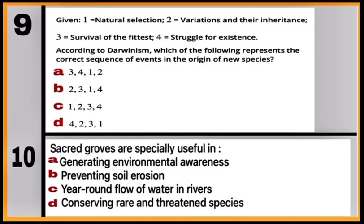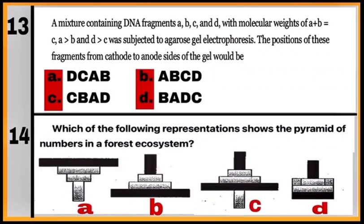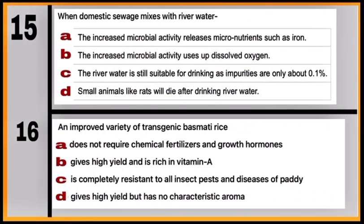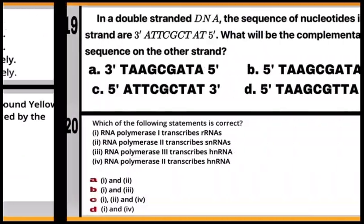Solve questions 9 and 10, and analyze the given pedigree chart of a family for a particular trait. Questions 11 through 16 follow next. Question 17 is based on Bt cotton plant.